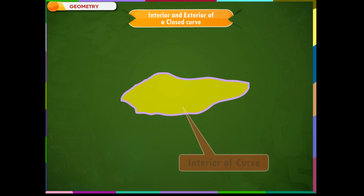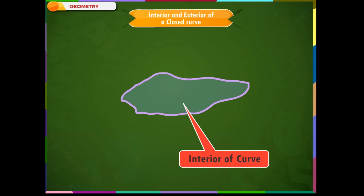The area which is inside a closed curve is referred to as the interior of the curve. The points A, B, C, D, E, and F all lie in the interior of this closed curve.